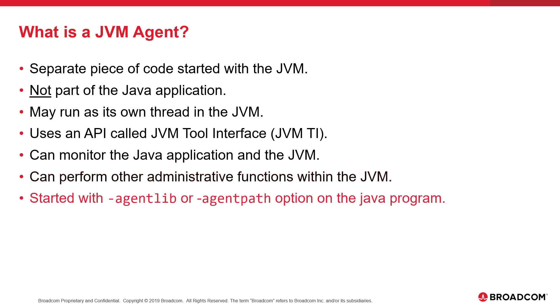The Agent can also perform other administrative functions within the JVM, such as dynamically altering the JVM runtime options. An Agent is typically started with the AgentLib or the AgentPath option — for example, if the Java application was being started from the command line, one of these options might be specified on the Java command line program.